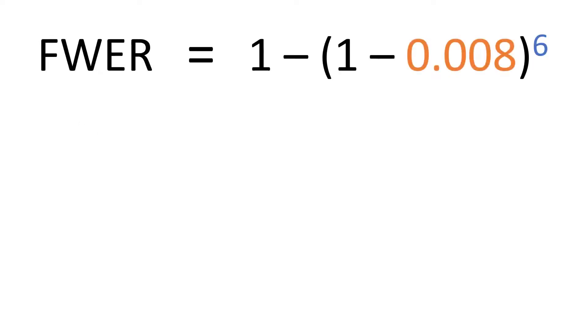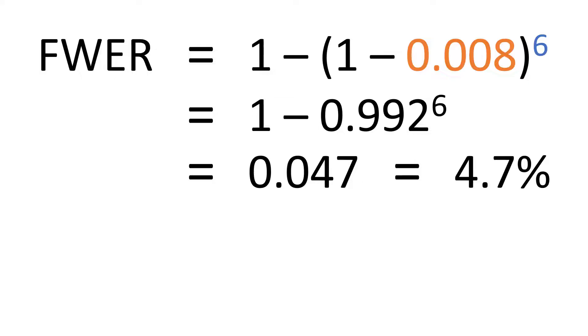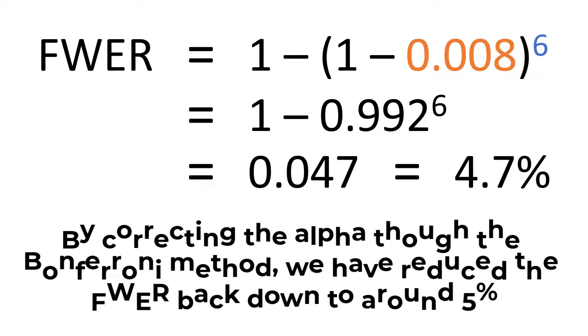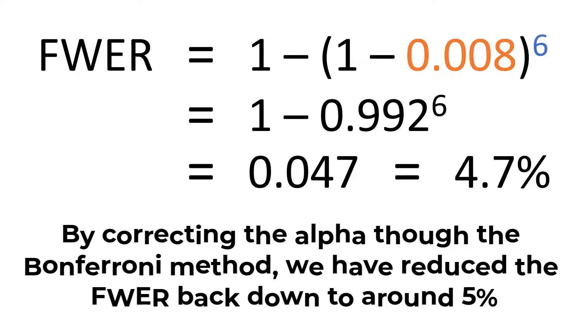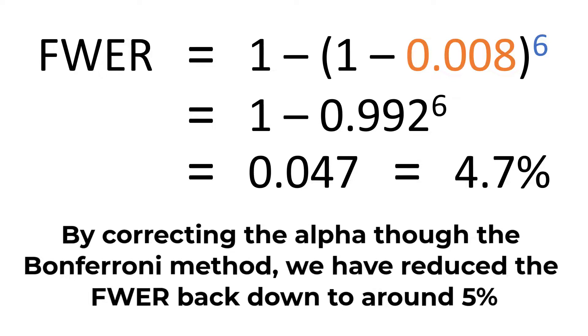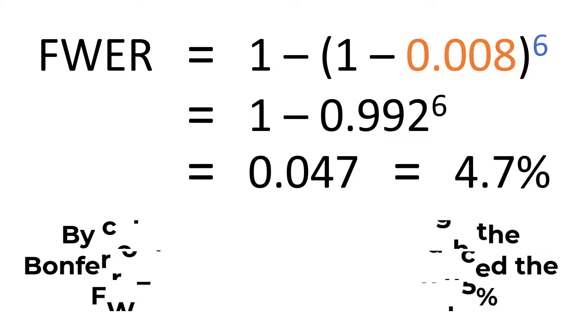Let's just quickly calculate the family-wise error rate using this corrected alpha with 6 tests. And doing so we can see that the outcome is at approximately 0.047 or 4.7%. So by correcting the alpha level through the Bonferroni method, we have reduced the family-wise error rate back down to approximately 5%, which is great.